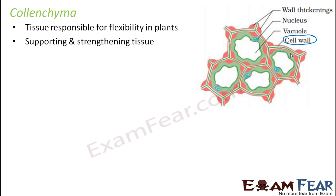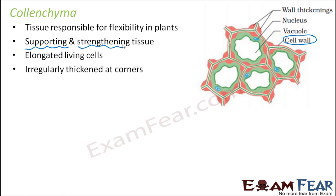So this is the supporting and strengthening tissue. The function of colenchyma is support and strength. If the plant has strength, then even if you twist it, it will not break, at least up to an extent. So colenchyma will give support to the plant and also flexibility and strength. They are elongated living cells — parenchyma and colenchyma both are living cells — and irregularly thickened at corners, as is very clear from this picture. So these are the corners, and they are quite thickened.